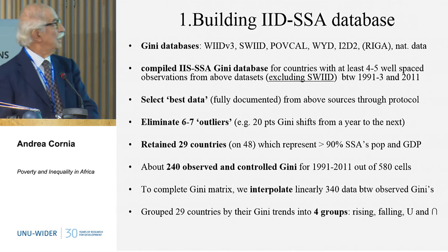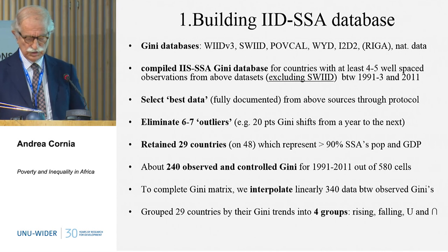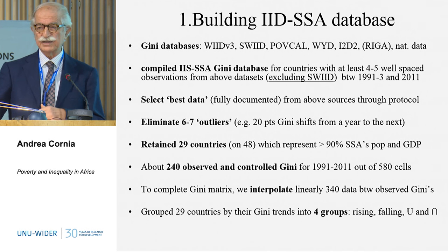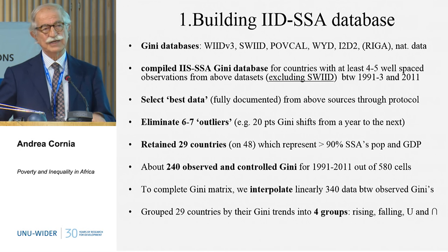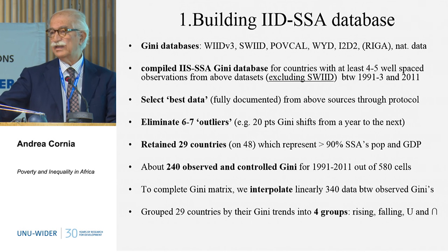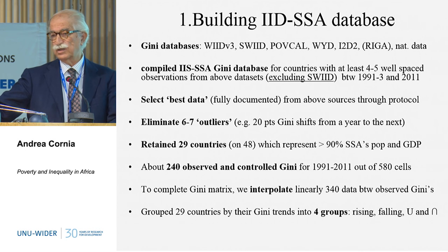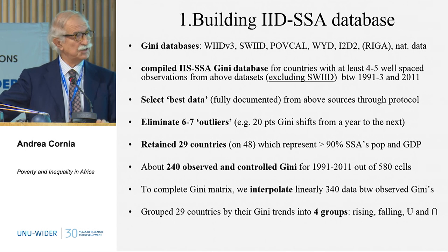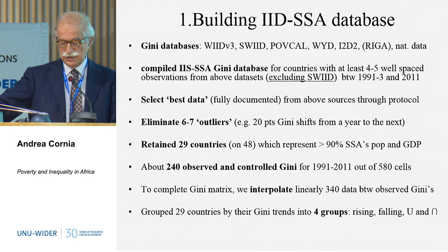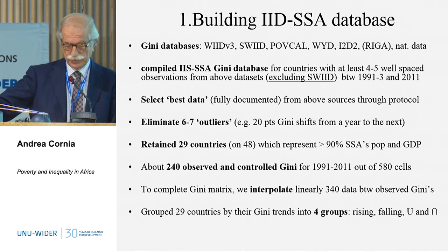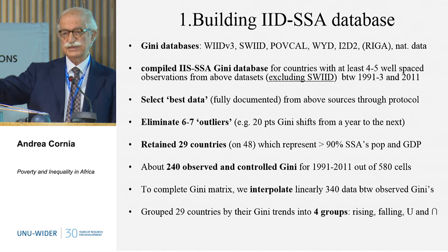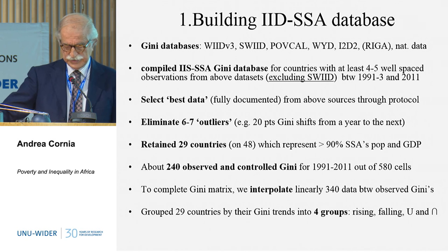This database is what we call the World Income Inequality integrated inequality database. We selected all the databases and, comparing all the statistics, selected the one which made more sense. We have a protocol, and basically we selected 29 countries out of 44 or 48. So we don't have all of Africa, but we have 90% of the population and GDP of Africa — about 240 Gini coefficients between 1991 and 2011. For countries with gaps, if the trends were smooth at the observed points, we interpolated, because in the end we want to do regression analysis.